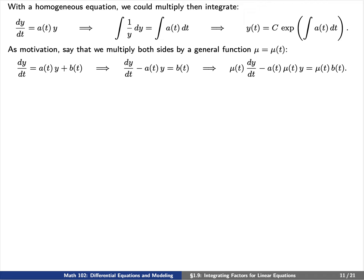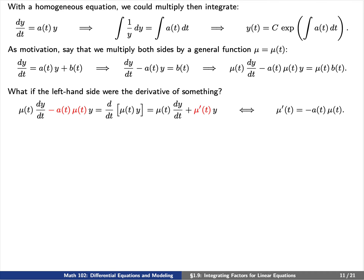In a slightly different way, let's say that we were to multiply both sides of our non-homogeneous equation by a general function mu of t. We'd find that dy/dt equals a of t times y plus b of t now becomes mu times dy/dt minus a of t times mu times y equals mu of t times b of t. Now let's take a closer look at the left-hand side of this equation. What if the left-hand side were the derivative of something — maybe d/dt of the product mu of t times y?